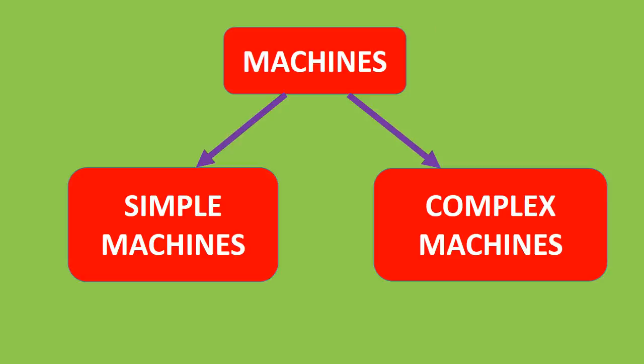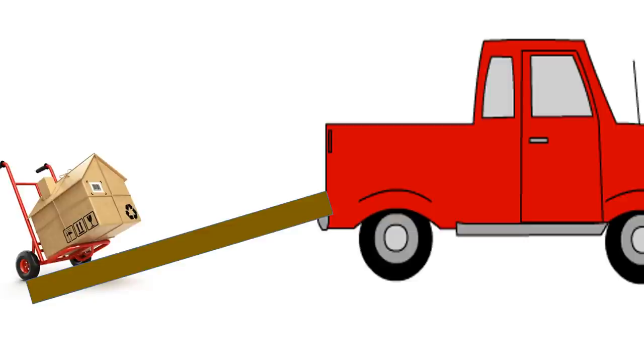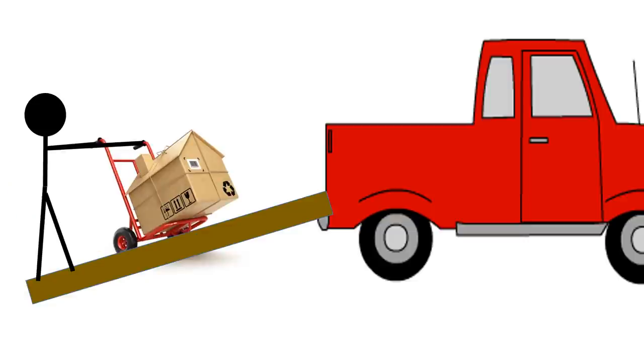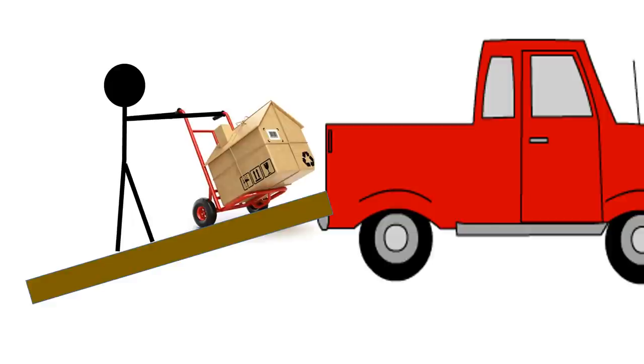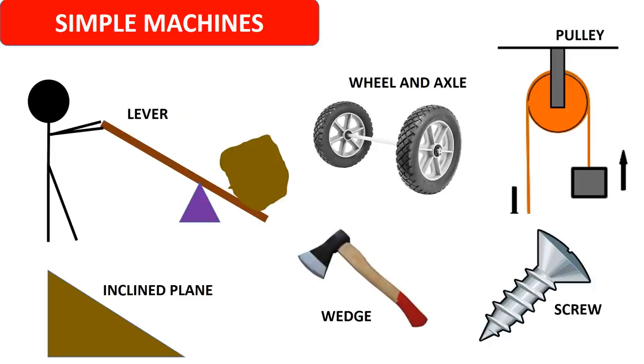Machines are of two types: simple machines and complex machines. Simple machines are basic mechanical devices for applying a force and doing work. It helps us to do any work with less effort. There are six basic types of simple machines: Lever, Wheel and Axle, Pulley, Inclined Plane, Wedge, and Screw.